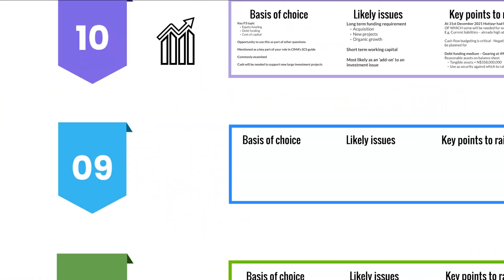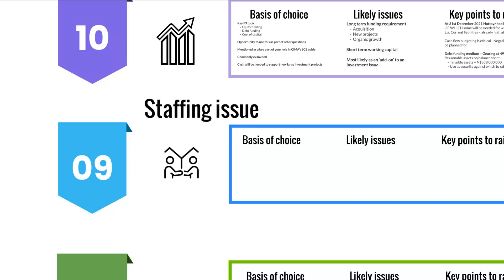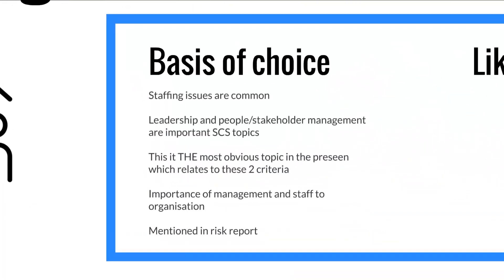Issue number nine is a staffing issue — issues with the staff. Leadership, people management, and stakeholder management skills are very important strategic case study topics and part of the CIMA syllabus criteria. These are the most obvious topics relating to those criteria, covering both the board of directors and the staff within the organisation. Furthermore, it was specifically mentioned as a risk within the risk report in the pre-seen. Likely issues include a key staff member leaving — such as the CEO or Dr. Ava — who has been a board member for 10 years, beyond the recommended nine-year maximum, so she may leave.